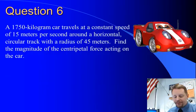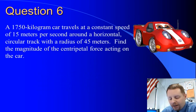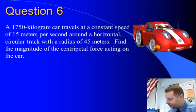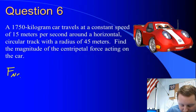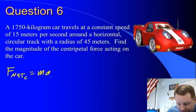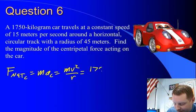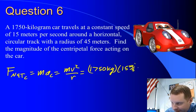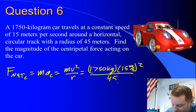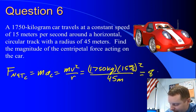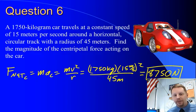One last problem: a seventeen hundred and fifty kilogram car travels at a constant speed of fifteen meters per second around a horizontal circular track with a radius of forty-five meters. Find the centripetal force acting on the car. Net force in the centripetal direction is MV squared over R: mass is 1750 kilograms, velocity is fifteen meters per second squared, divided by a radius of forty-five meters, for a total of eight thousand seven hundred and fifty Newtons. Hope this was helpful — good luck and have a great day.